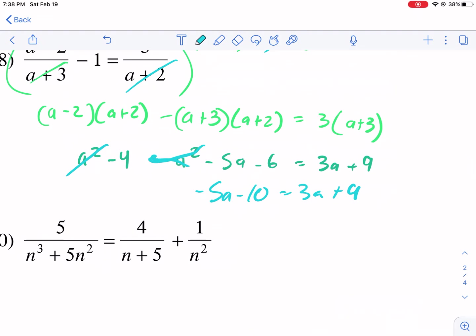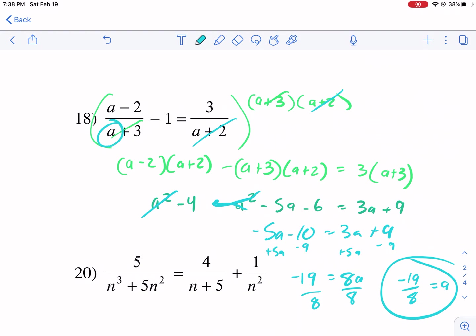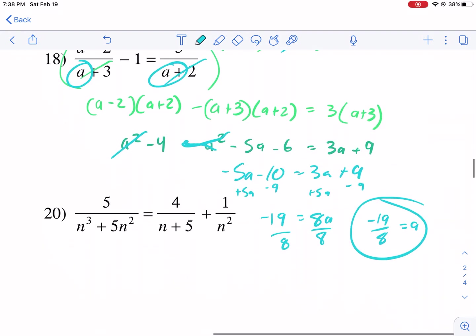Let's see here. The a² is going to cancel with that one. We're going to have negative 5a minus 10 on the left side, 3a plus 9 on the right side. I'm going to add the 5a to both sides, so we get 8a, and I'm going to subtract 9 from both sides equals negative 19. Divided by 8, negative 19/8 is going to be equal to a. I need to check for extraneous roots. A can't equal negative 3, can't equal negative 2. We're good there. That's not the answer, so we're set.